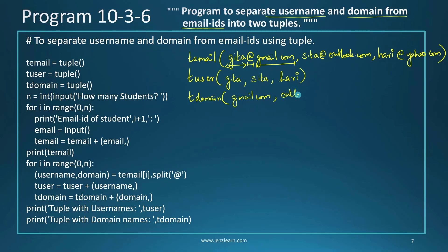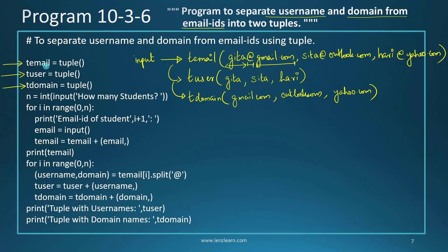The domain name comes after the '@' symbol — so for the first email, the domain is gmail.com; for sita, it is outlook.com; for hari, it is yahoo.com. Initially, I create three empty tuples: t_email for collecting all student email addresses, t_user for storing all usernames, and t_domain for storing all domain names.